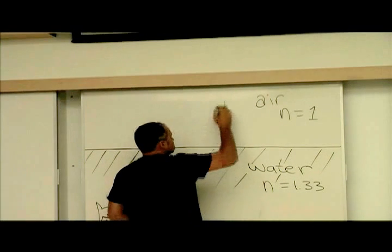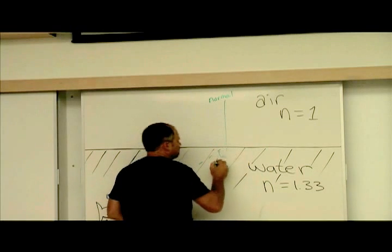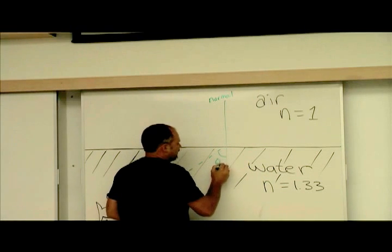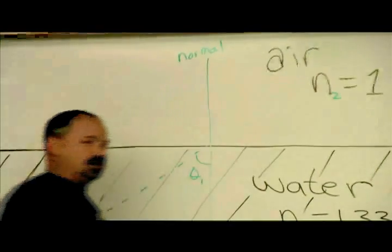Well, let's draw the normal line first. So this would be the normal line. This would be the incident angle, which I'll call theta 1. I'll call this N1. And air will be the N2.